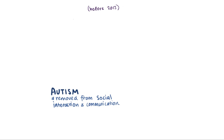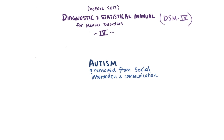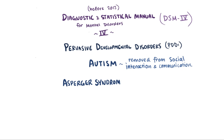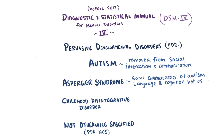Before 2013, the Diagnostic and Statistical Manual for Mental Disorders, fourth edition, or the DSM-IV, described autism as one of several pervasive developmental disorders, which also includes Asperger's syndrome, childhood disintegrative disorder, and those not otherwise specified, or PDD-NOS. Asperger's syndrome was used for children that appeared to have characteristics of autism, like difficulties with social interactions or non-verbal communication, but don't generally have significant delays in language or cognitive development, and therefore was sometimes referred to as a high-functioning form of autism.